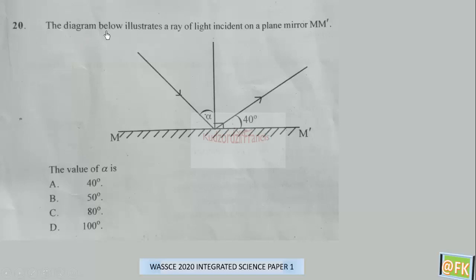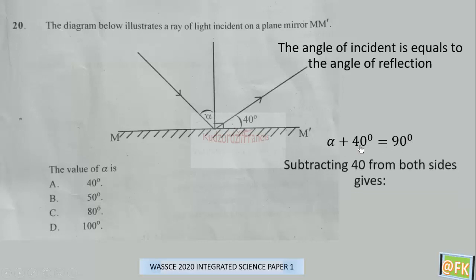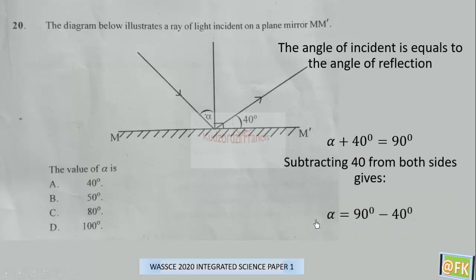Question 20: The diagram illustrates a ray of light incident on a plane mirror MM'. We have to calculate the value of alpha. The angle of incidence equals the angle of reflection, and together they give us 90 degrees. To get alpha, we subtract 40 from 90, so alpha is 50 degrees. The correct answer is B.